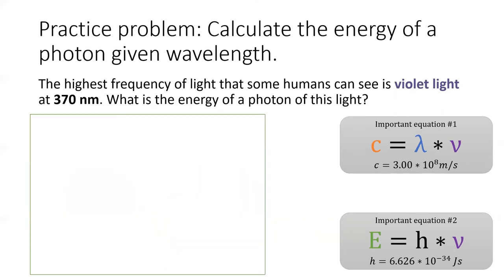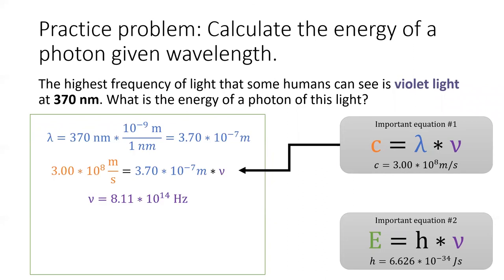Well, in order to get the energy of a photon, we need to know its frequency. Unfortunately, this problem gives us wavelength. We'll use equation number one to convert wavelength to frequency. Remember, we'll have to convert nanometers to meters first using the math in blue. Once we have the frequency, we'll plug it into equation two and solve for energy.